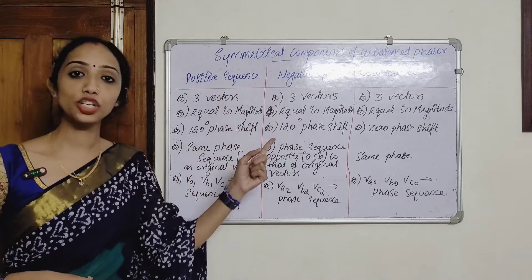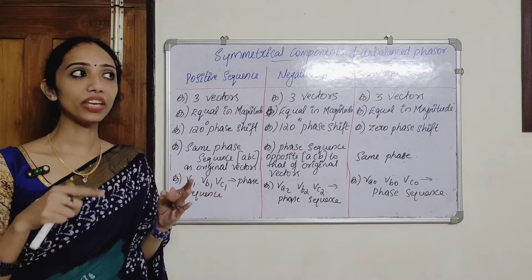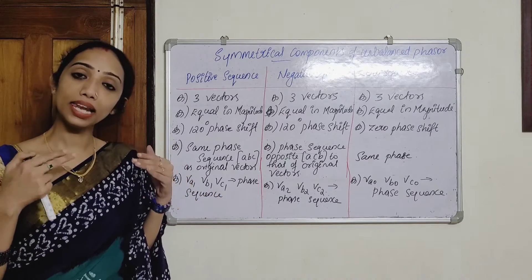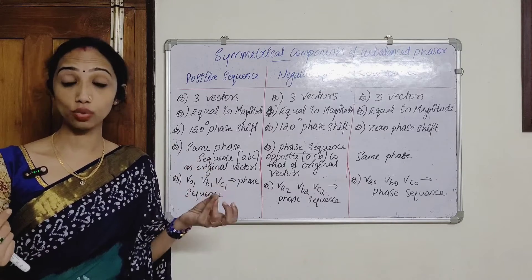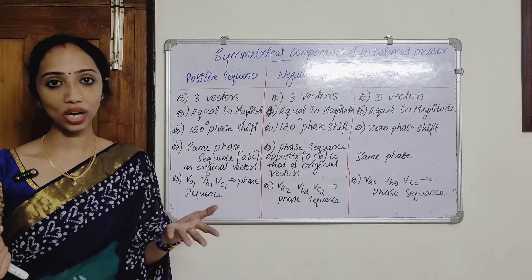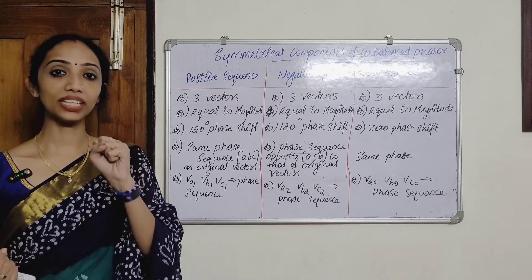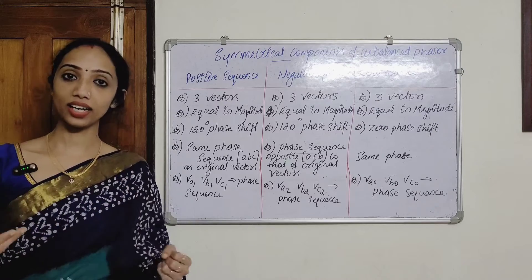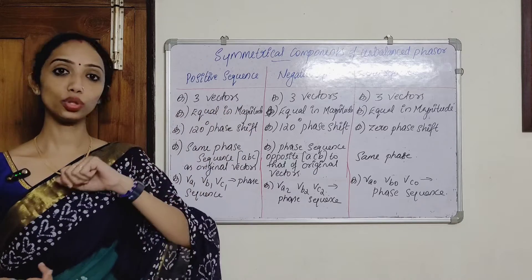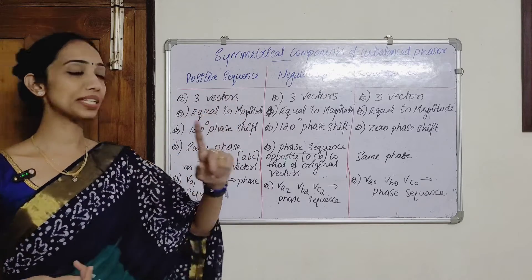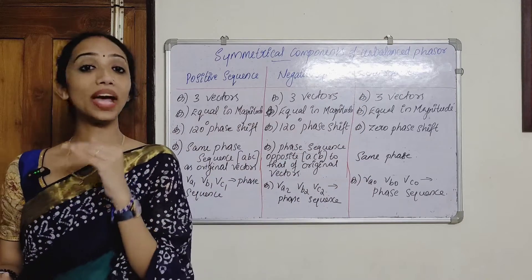The vectors are equal in magnitude — all magnitudes are equal, meaning VA1 magnitude equals VA2 magnitude. That is positive sequence, negative sequence — magnitude is equal — and zero sequence, magnitude is equal. One sequence has a 120-degree phase shift; negative sequence also has a 120-degree phase shift; and in the case of zero sequence, we have zero phase shift.